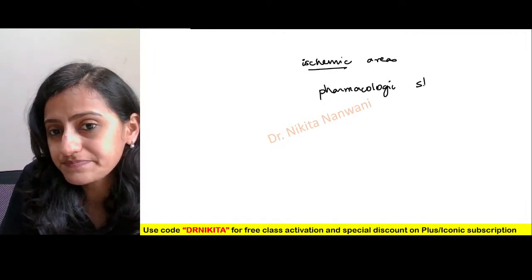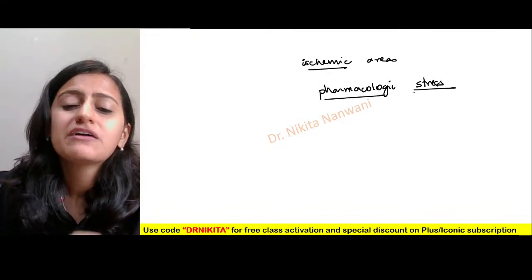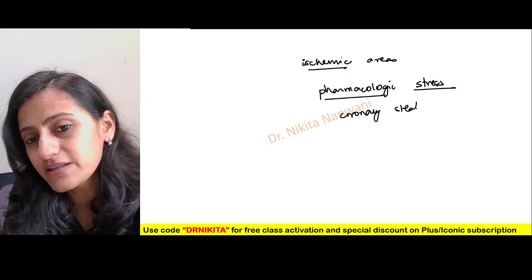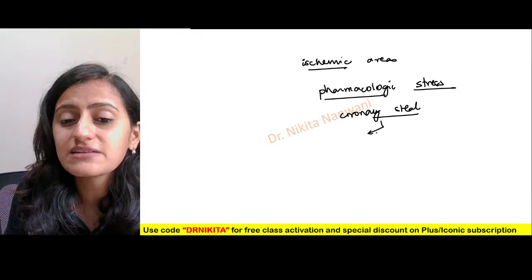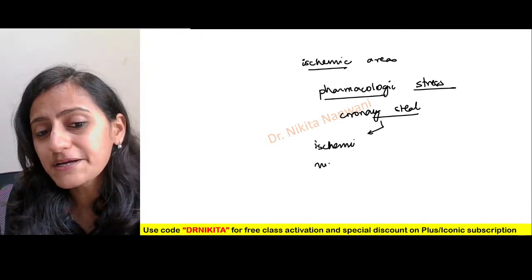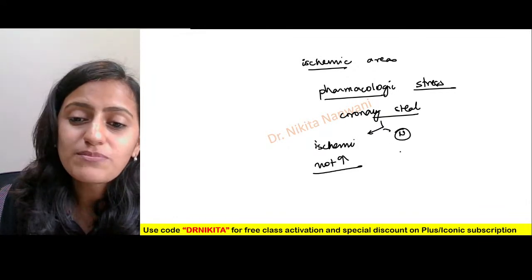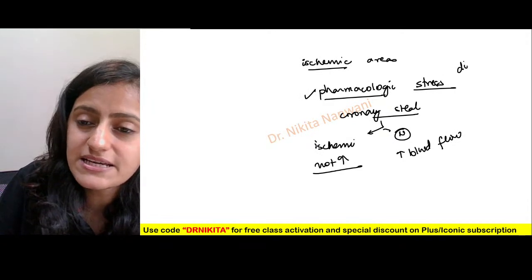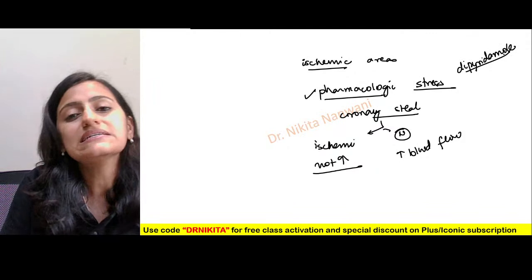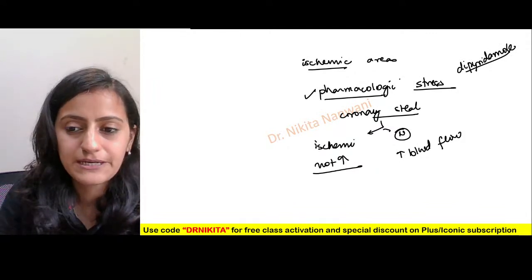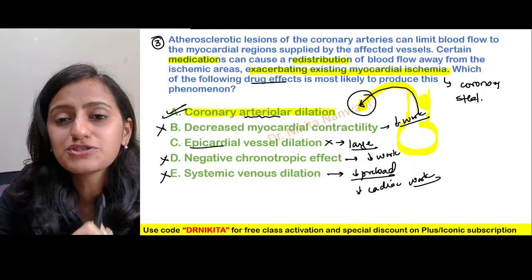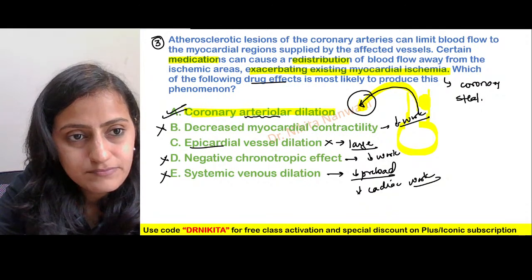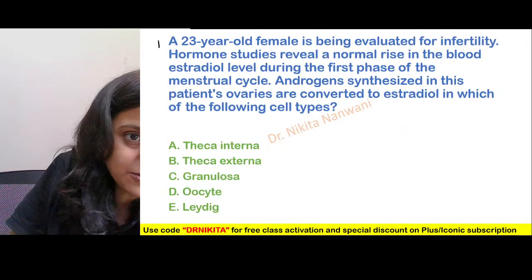In pharmacologic stress testing, we use adenosine or dipyridamole, which cause this coronary steal phenomenon. The ischemic myocardium will not show increased blood flow while the normal myocardium will — creating a detectable difference. This is how pharmacologic stress testing using dipyridamole helps identify ischemic myocardium. Coronary steal is shown by drugs that cause arteriolar dilatation, like adenosine and dipyridamole.